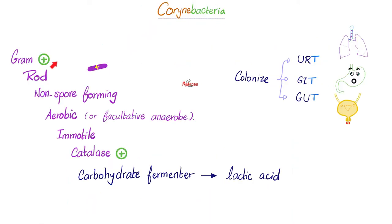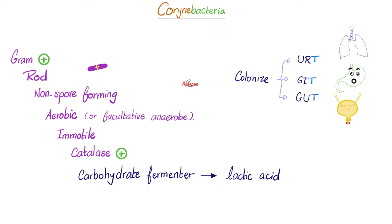Corynebacteria are gram-positive rods, non-spore-forming, aerobic or facultative anaerobes, immotile, catalase-positive. They do ferment carbohydrates, releasing lactic acid in the process, and they commonly colonize your upper respiratory tract, your gastrointestinal tract, and your genitourinary tract.